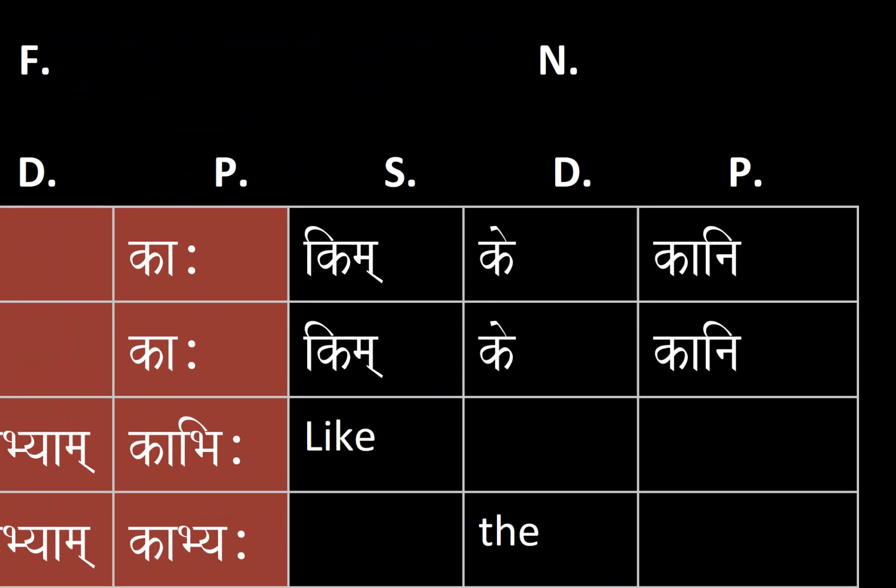Finally, for the neuter. The nominative singular, dual, and plural we have kim, ke, and kāni. For accusative we also have singular, dual, and plural respectively: kim, ke, and kāni.